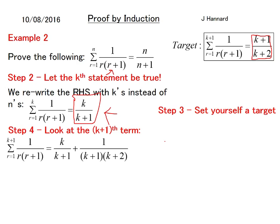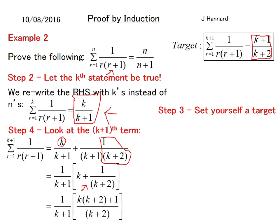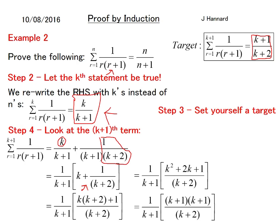So we bring out a factor of 1 over k plus 1 and we are just left with k and 1 over k plus 2. And now we want to put this under a common denominator. So we times the k by k plus 2 and stick it all over k plus 2 like that. And then at this point we expand and we get that. And now I'm thinking that factorizes, so we end up with that.